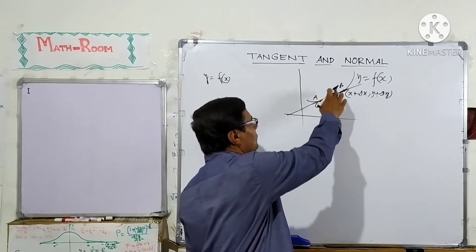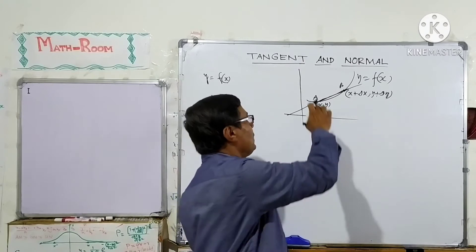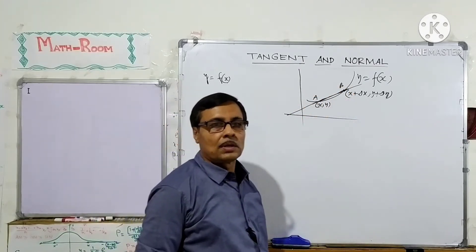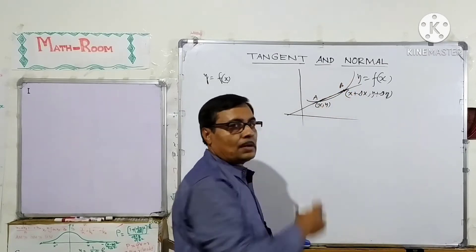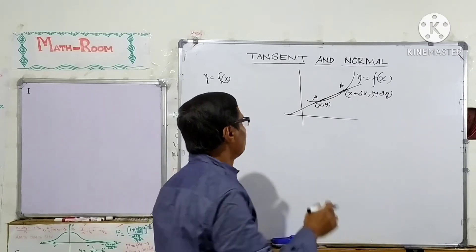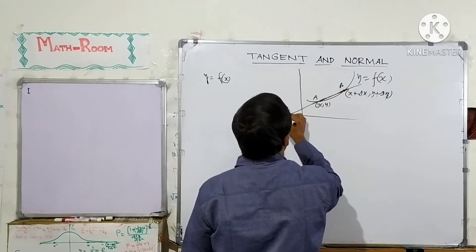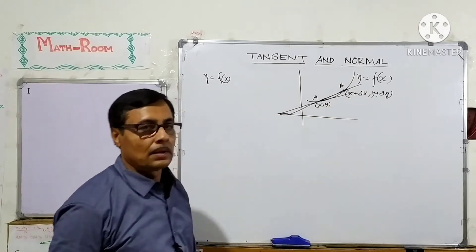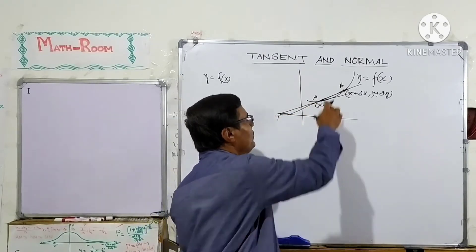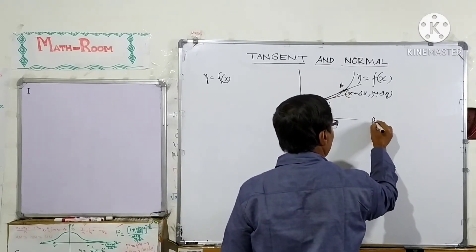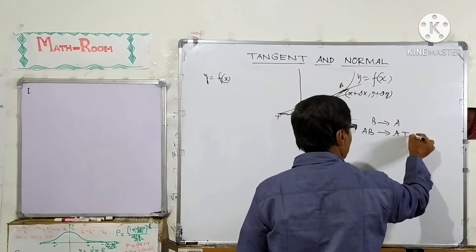These two points are neighboring points. If point B approaches A, that is Δx and Δy tend to 0, meaning A and B are two infinitely close points, then this intersecting line becomes the tangent at point A. When B approaches A, the secant line AB approaches line AT, and this line AT is called the tangent.